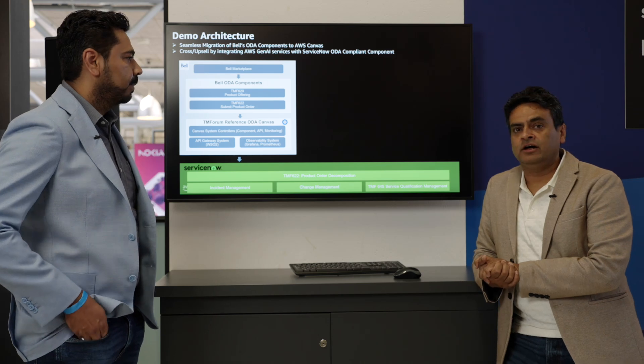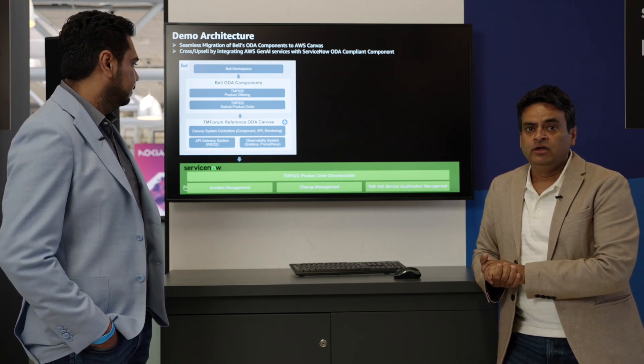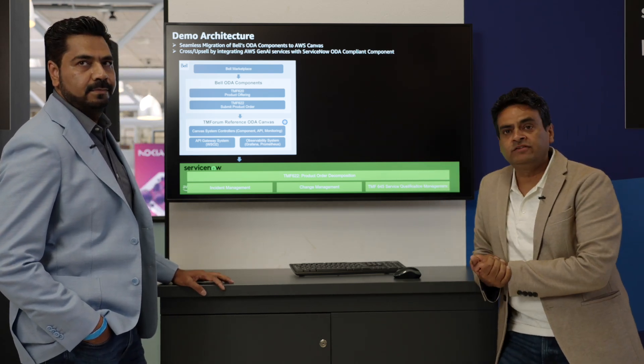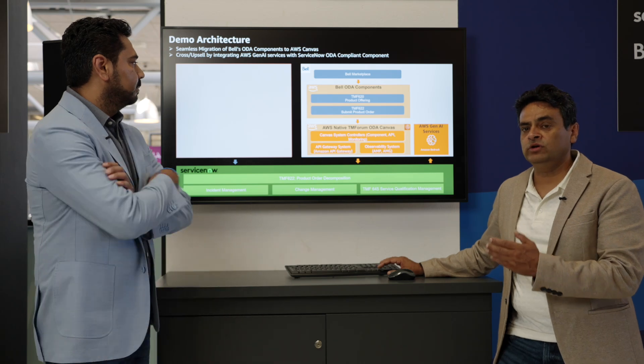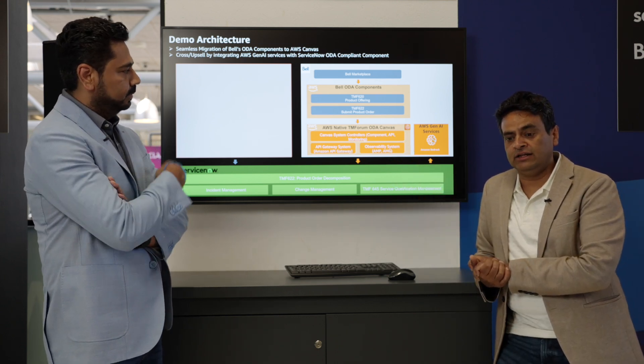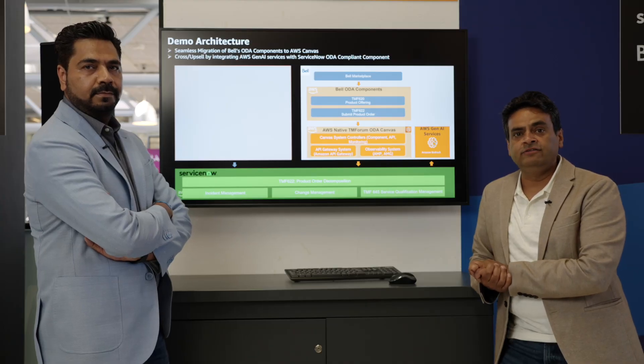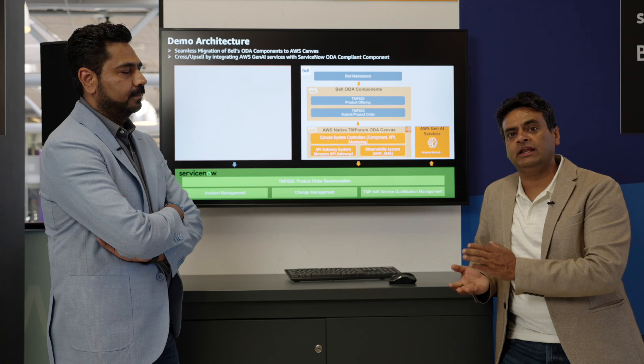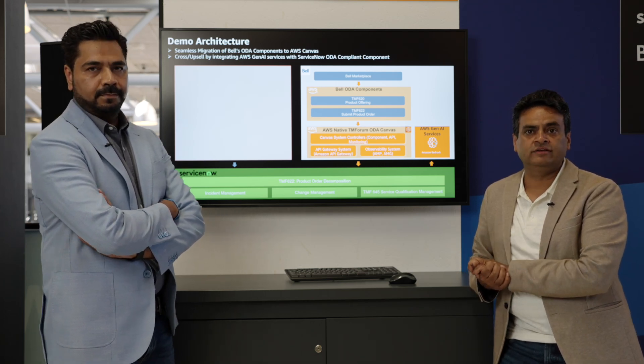That was a great demo from Amol. To walk through the architecture: Bell had two components, TMF 620 and TMF 622 — product catalog and product order submission — which they made ODA Canvas-compliant, enabling seamless migration to AWS. Once on AWS, the components started using AWS native services. Another key benefit is that bringing workloads to AWS enables use of additional native services like Gen AI — for example, ServiceNow making a call to Bedrock for recommendations to enable cross-sell and upsell. That's how easy it is to modernize using AWS native Canvas, and we've shown what Bell's components can do once they're compliant. Thank you.